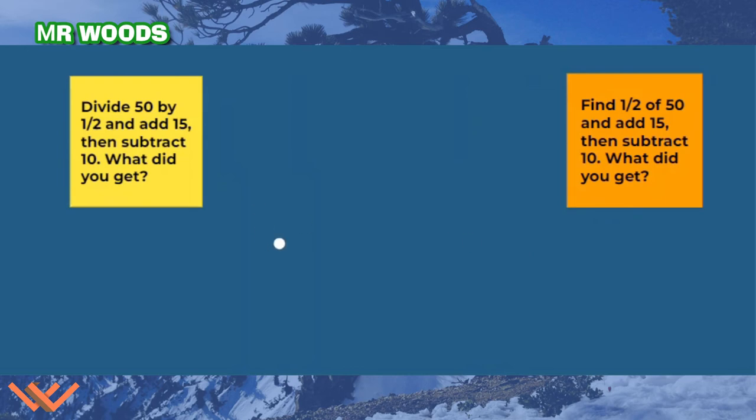So we have find 1/2 of 50 and add 15 and subtract 10. So 1/2 of 50, what does that mean? We're going to say 0.5, which is 1/2, times 50. That's equal to, I did that on purpose because I wanted to show you something here. Let's make that into a fraction now. So that's still going to be equal to 1/2 times 50/1.